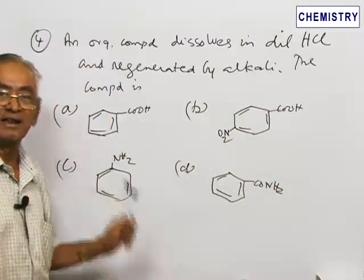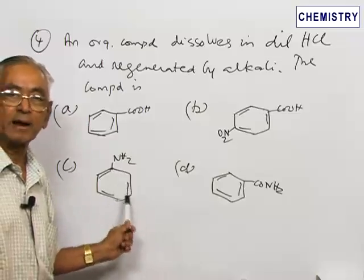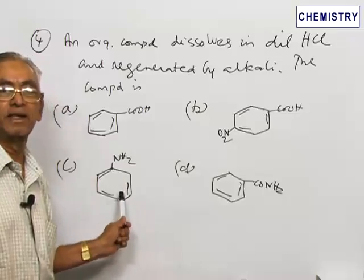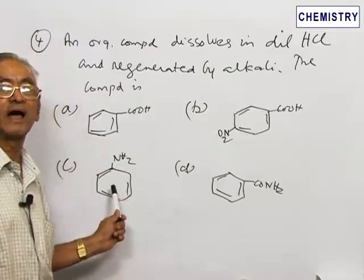Look at C which is aniline. Aniline actually contains is the primary amine, it is an aromatic, it is a weak base but it is a primary amine, aromatic amine. A primary amino group attached directly to a ring which is known as aniline.